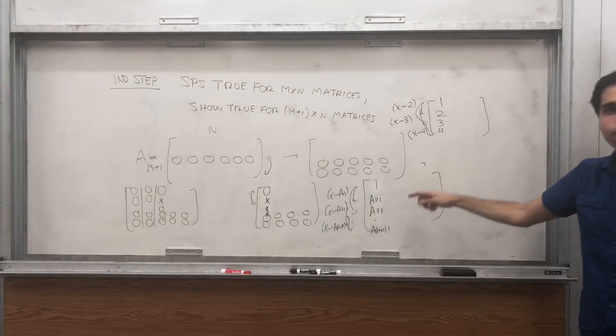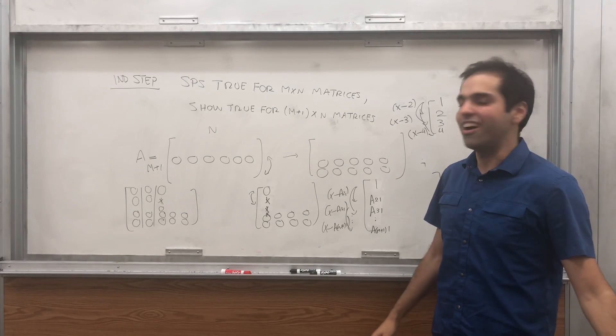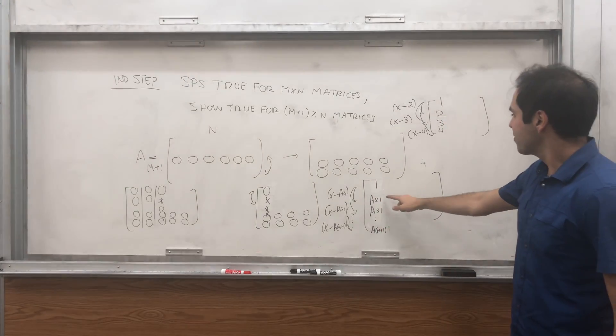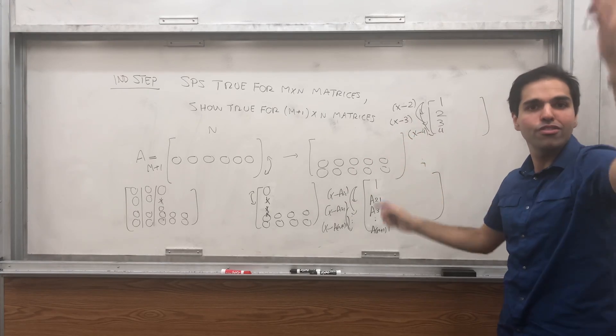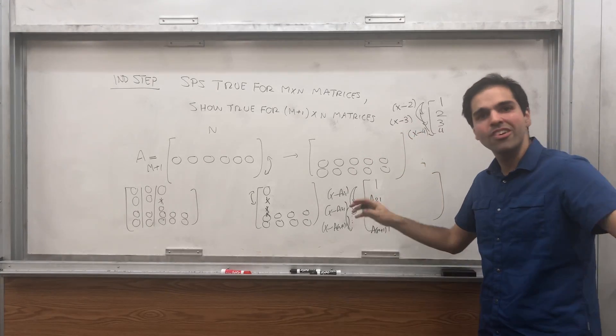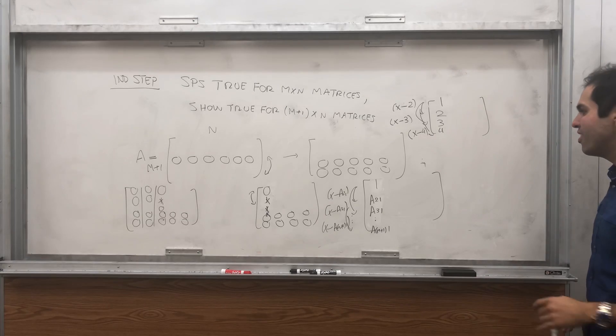And by the way, if all of them were zero, it's completely fine because it just means you do nothing. And in fact, if the first column is like one, zero, zero, zero, essentially you're done and you move on to the next one.